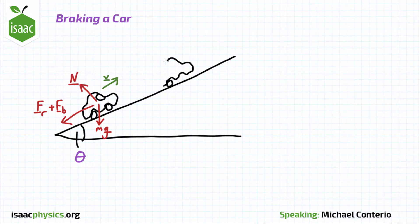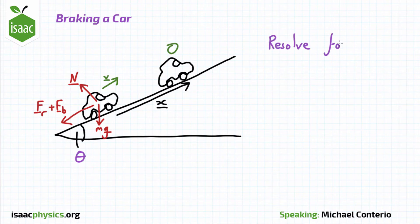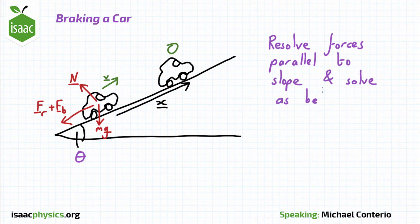After it's travelled a distance x up the slope it now has a speed of zero. This question can be solved using the same methods as the previous part of the question, however first you have to resolve the forces parallel to the slope.